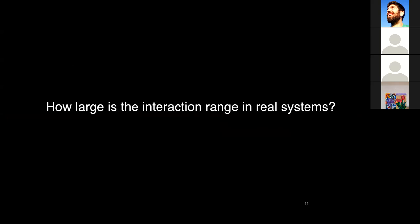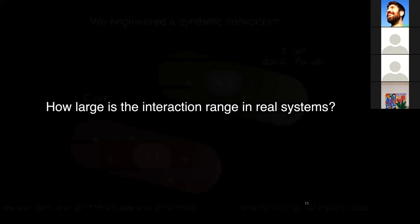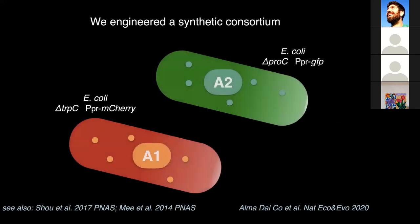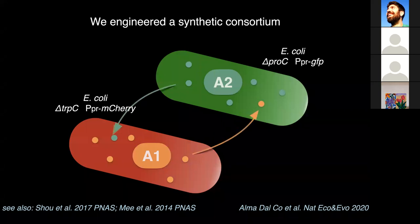We wanted to study a very simplified microbial community where we could really be quantitative in our measurements. We developed a synthetic consortium of two Escherichia coli cell types. These two cell types were unable to produce one amino acid each: one was unable to produce proline and the other was unable to produce tryptophan. They also carried a fluorescent marker so we could distinguish them under fluorescent microscopy — one cell type would be green and the other would be red. These two cell types are able to grow together despite their inability to produce an amino acid, because they can exchange it with the partner. When growing in isolation they are not able to grow, but when mixed together they can exchange amino acids and grow.